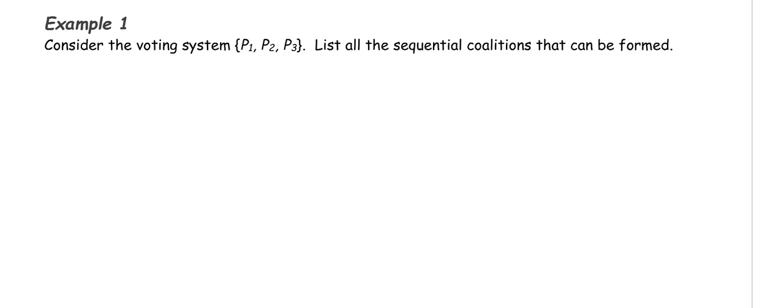Example 1. We want to consider the voting system with three players, P1, P2, and P3, and list all of the sequential coalitions that can be formed.